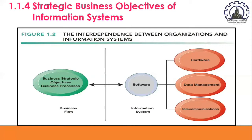Information systems are essential for conducting day-to-day business in most advanced countries and achieving strategic business objectives. Entire sectors of the economy — such as e-commerce firms like Amazon — would not exist without substantial investments in information systems. Today's service industries such as finance, insurance, real estate, travel, medicine, and education could not operate without information systems. Similarly, retail firms like Walmart and Sears, and manufacturing firms like General Motors, Volkswagen, Siemens, and GE require information systems to survive and prosper.